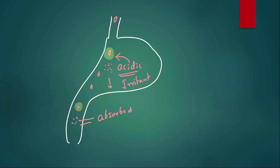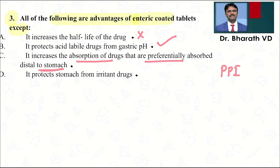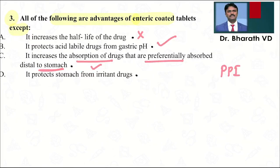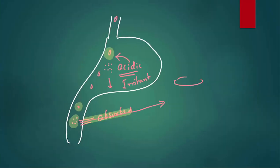Reading the options again: 'It increases the half-life of the drug' — this is incorrect, because half-life is observed after the drug is already absorbed into systemic circulation; enteric coating only affects absorption. 'It protects acid-labile drugs from gastric pH' — correct, that is why proton pump inhibitors are enteric-coated. 'It increases absorption of drugs preferentially absorbed distal to the stomach' — correct. 'It protects the stomach from irritant drugs' — correct.